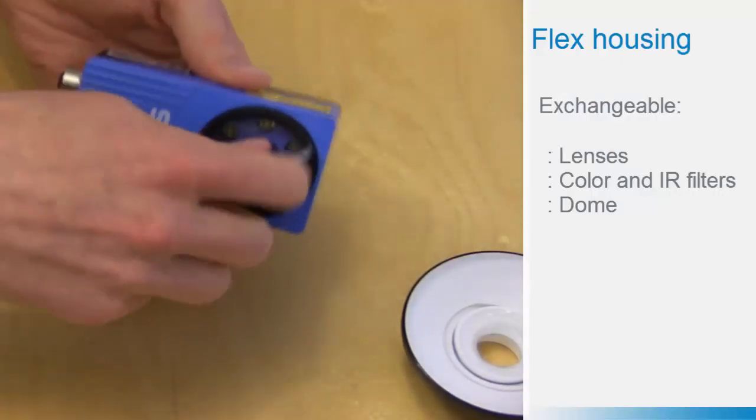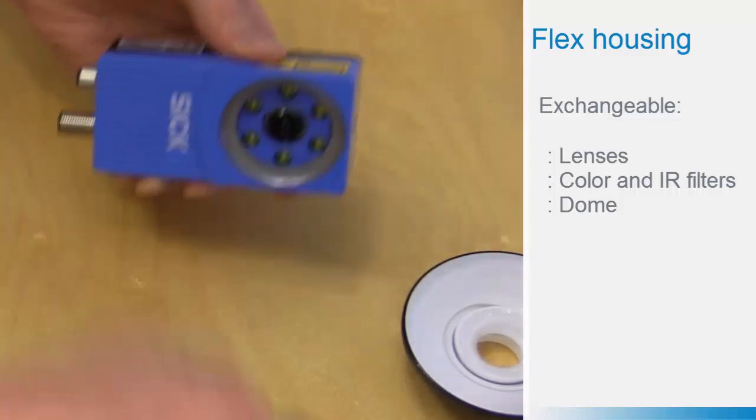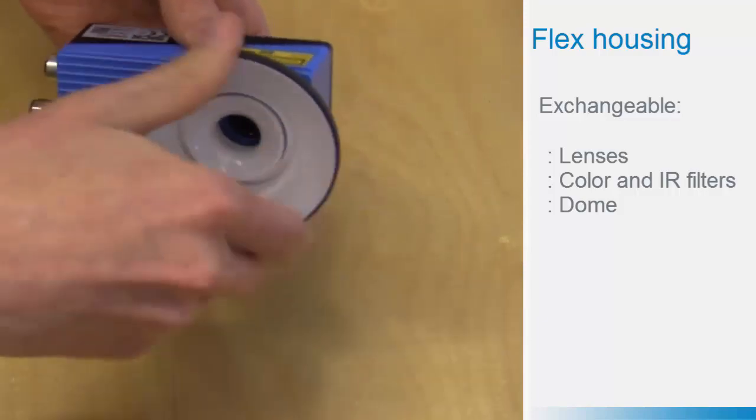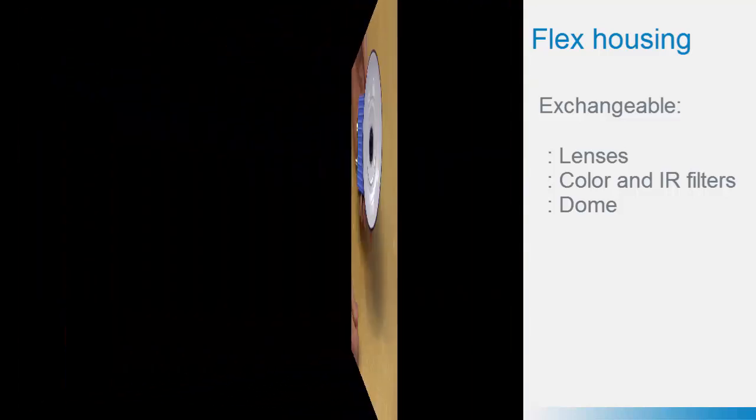The key to solving vision problems is good image quality. The Flex concept of Inspector PIM-6D makes this easy. With exchangeable lenses, filters and a dome, you can optimize the quality of your image.